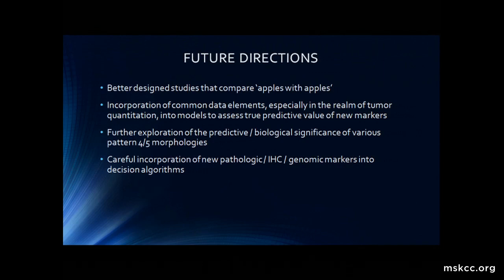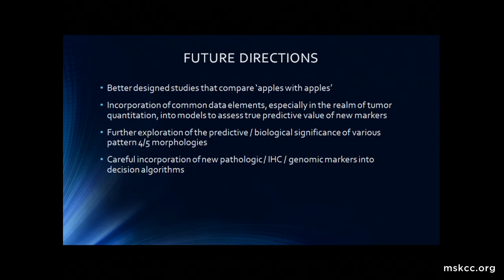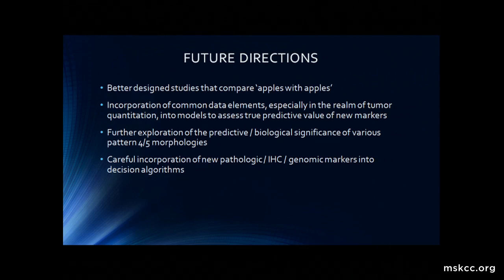With that, let me leave you with some future directions that pathology may be helpful with. Can we better design studies that actually compare apples with apples? Can we incorporate common data elements, especially in the realm of tumor quantitation, that have been in pathology reports for 10 years — is that rich data being used? Pathologists need to further explore the predictive or biologic significance of various morphologies, and careful incorporation of new pathologic, IHC, and genomic markers into decision algorithms in a stepwise, head-to-head process. Thank you.